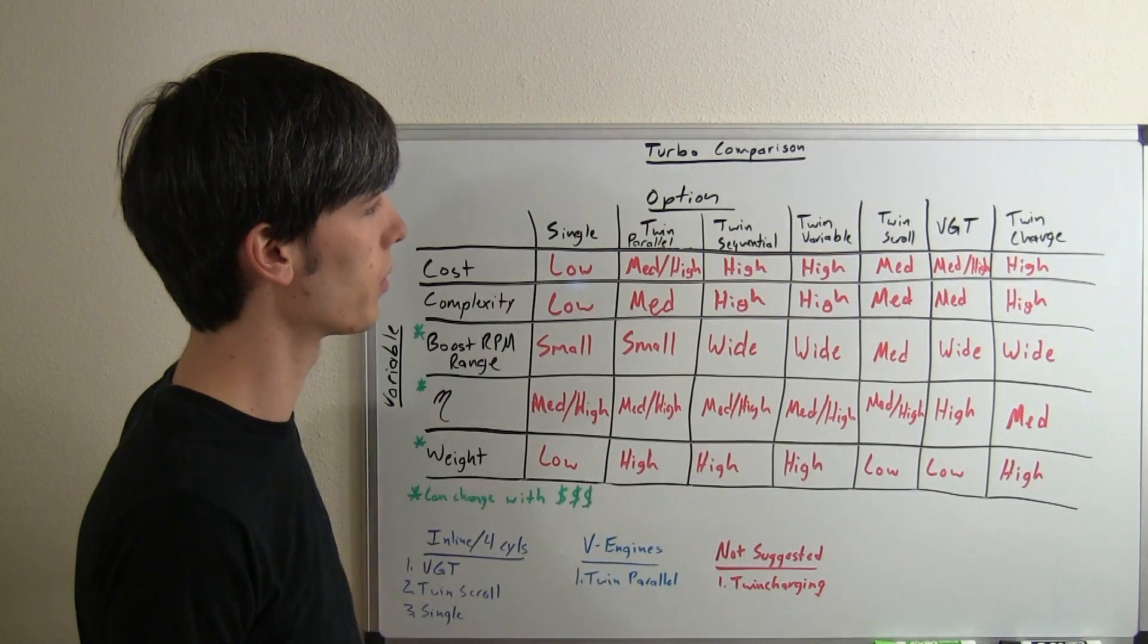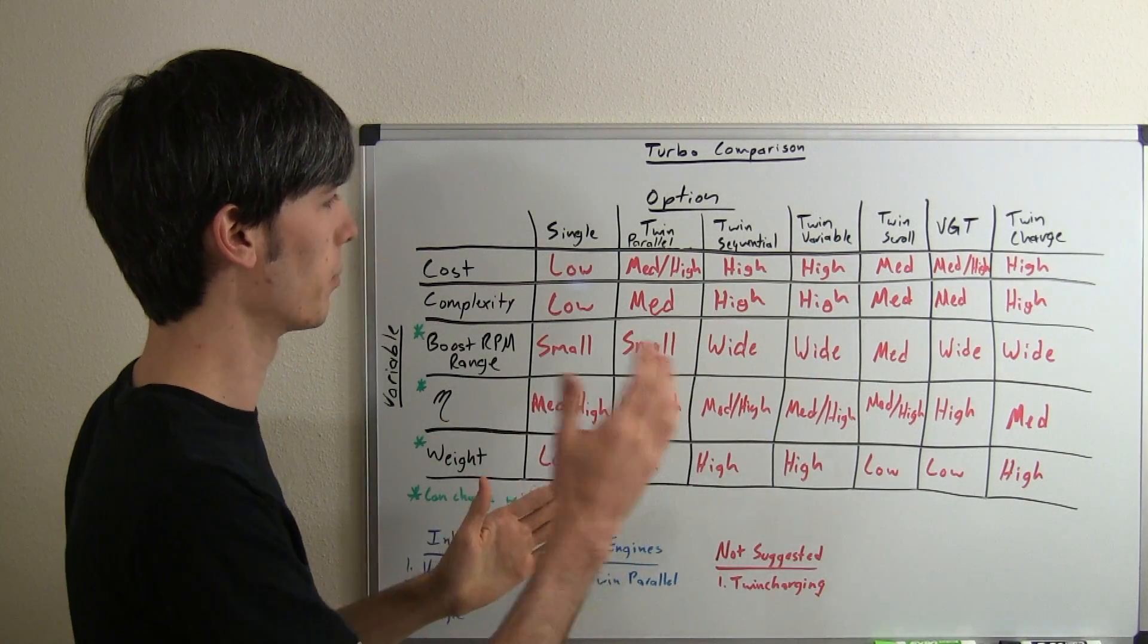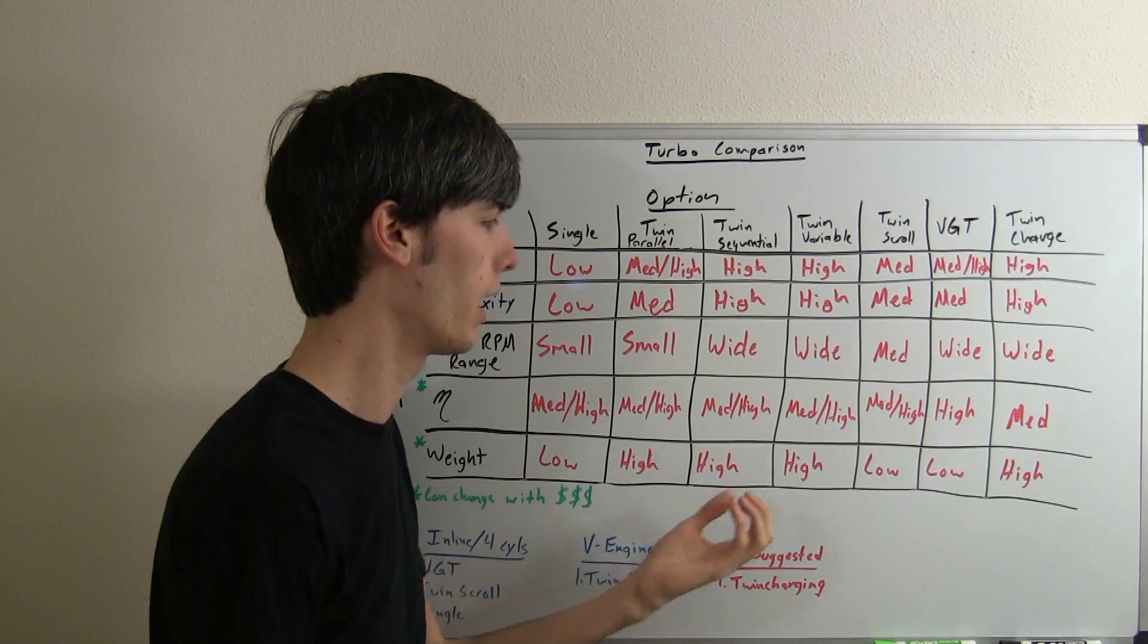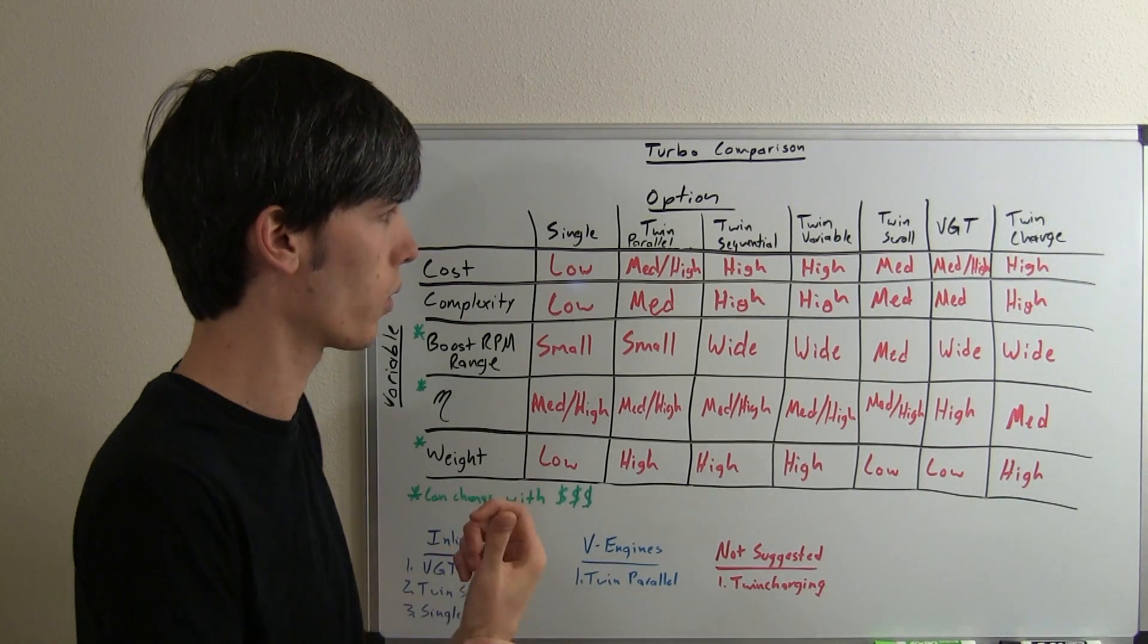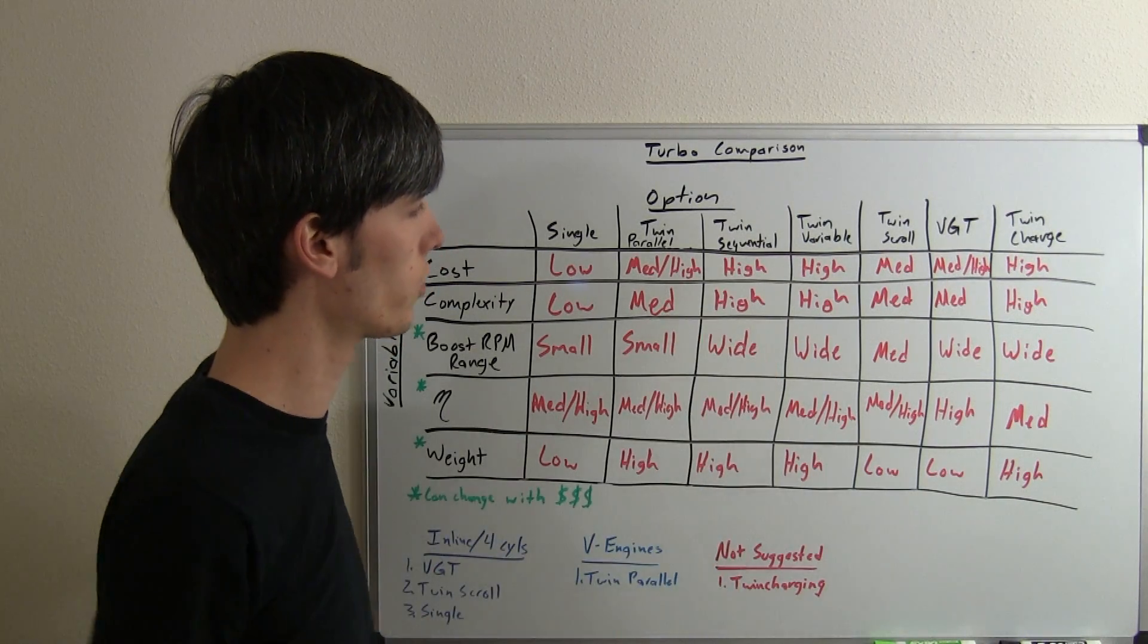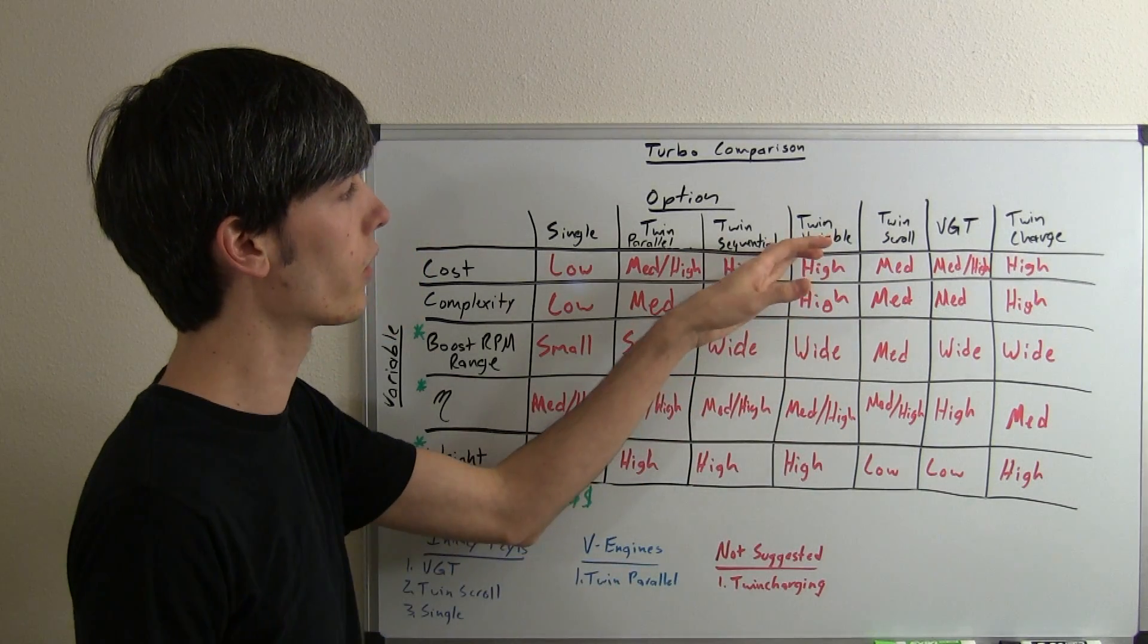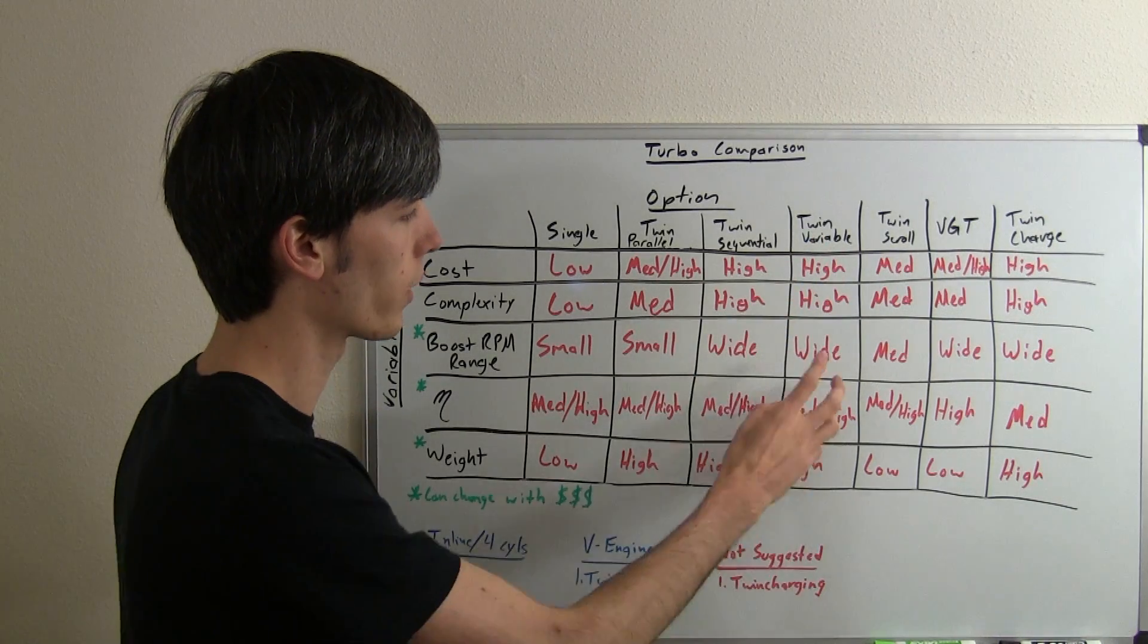Now twin variable, so different size turbochargers: cost is going to be high, complexity is high. You do have that wide RPM range, so that's the benefit. The efficiency: medium to high, and then the weight of course is going to be high as well with these two turbochargers and kind of complex pipe routing. Now these are good for diesel applications though, so they kind of do have their niche market of where they are really useful.